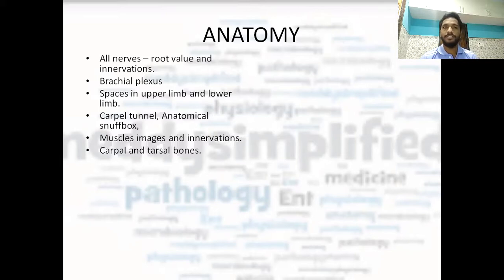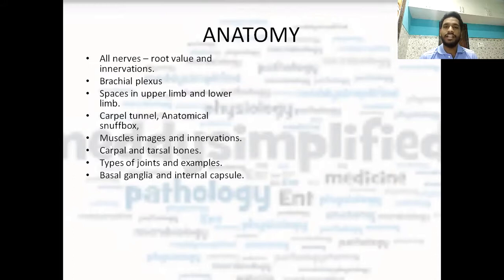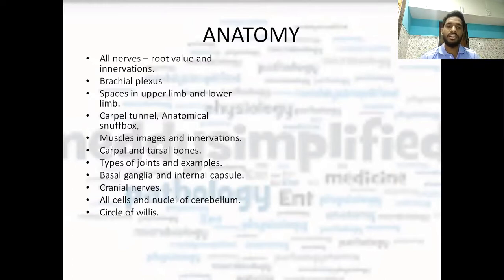Then carpal and tarsal bones, and the joints. For the carpal bones: which is the largest carpal, which is the smallest carpal. Then types of joints with entire examples — you can watch our video for that. Then basal ganglia and internal capsule: parts of basal ganglia. Images of basal ganglia and internal capsule are very important. All the cranial nerves are important, especially the 5th, 7th, and 10th — these major nerves are very important for FMGE exams. All the cells and nuclei of the cerebellum: there are 5 cells arranged in 3 layers. All the nuclei — dentate nucleus, fusiform nucleus, etc. — are important.